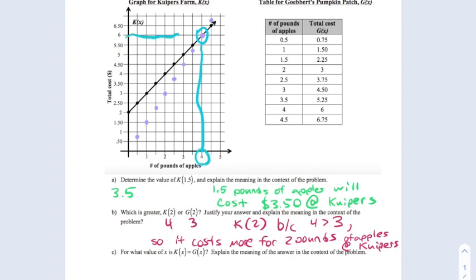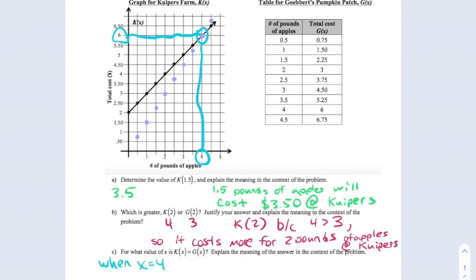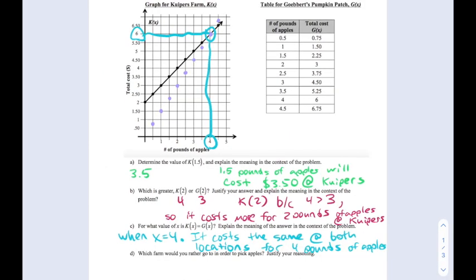So my answer is when x equals 4. What does this mean in the context of the problem? It means that it'll cost the same at both locations for 4 pounds of apples, since the x of 4 has the same output in both functions.